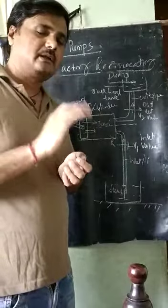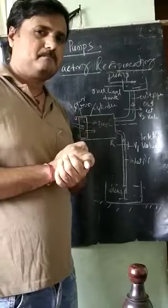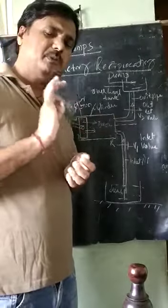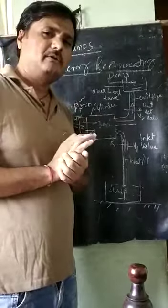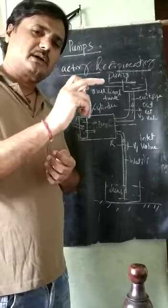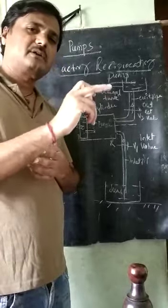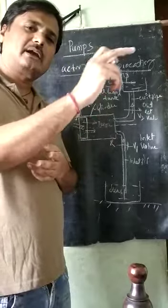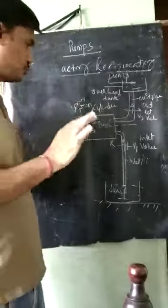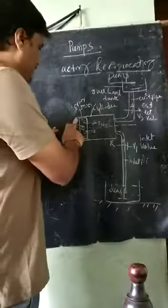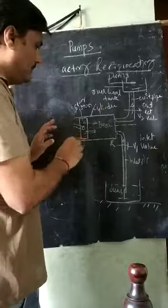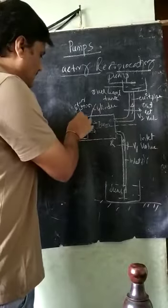There will be the arrangement of a motor which is connected to the crankshaft, crank, and connecting rod. This arrangement will be there but it is not shown here. Now, double acting pump - the only difference is here.